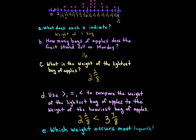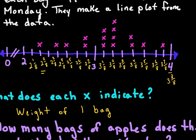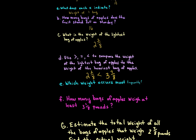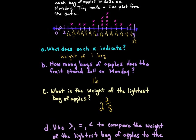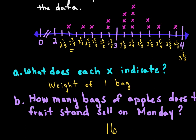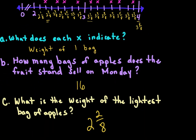Which weight occurs most frequently? The one with the most Xs is three and two-eighths. How many bags of apples weigh at least three and one-eighth pounds? Looking at the plot, three and one-eighths has three Xs on top.